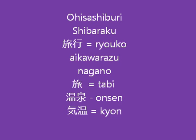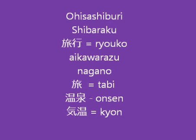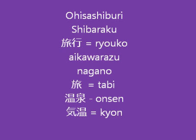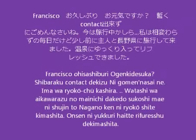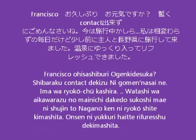In this letter we're going to learn words like 'ohisashiburi,' 'shibaraku,' 'ryoko,' 'aikawarazu' — meaning things haven't changed, it's all the same. She talks about going to Nagano, so we'll see how Nagano is written, and analyze 'ryoko' and 'tabi' meaning to travel. It's a lot of words, so I want to split this video in two.